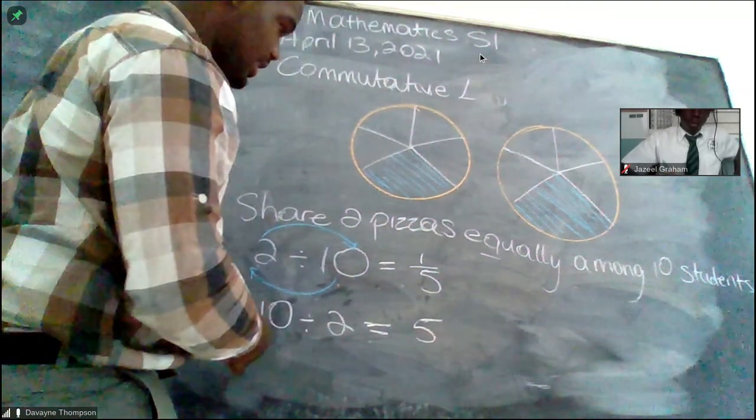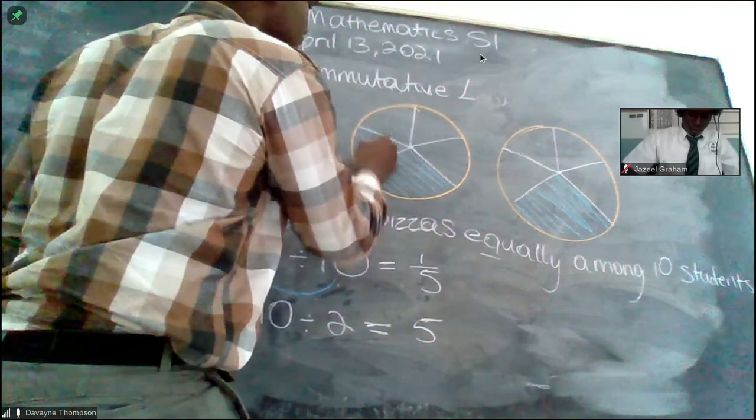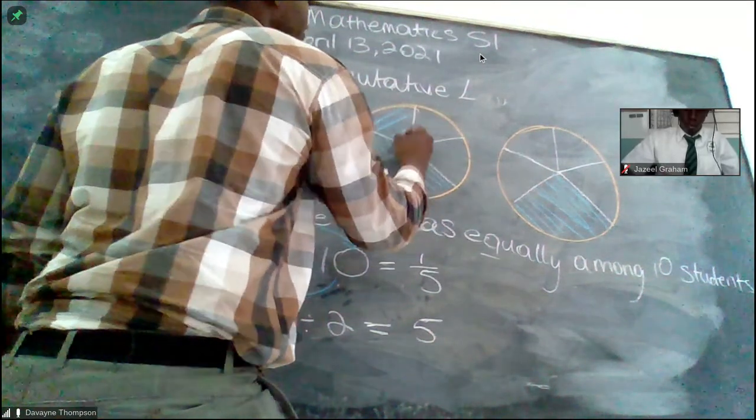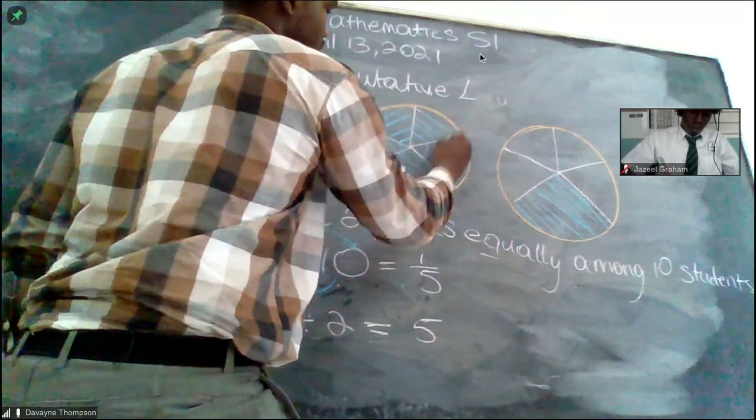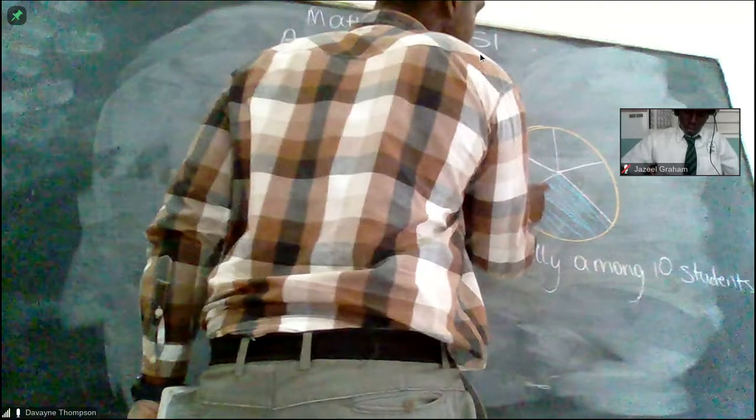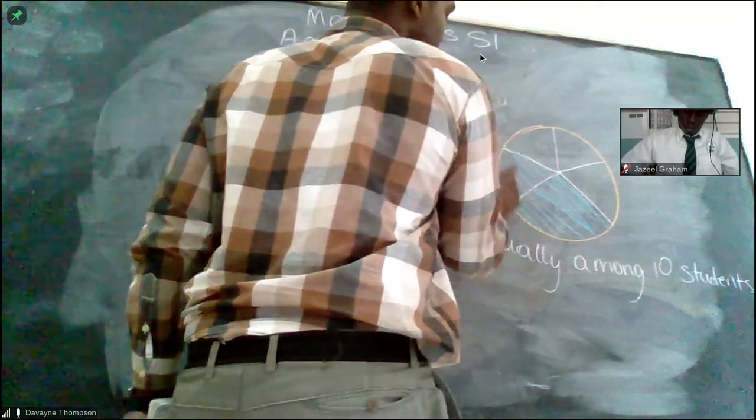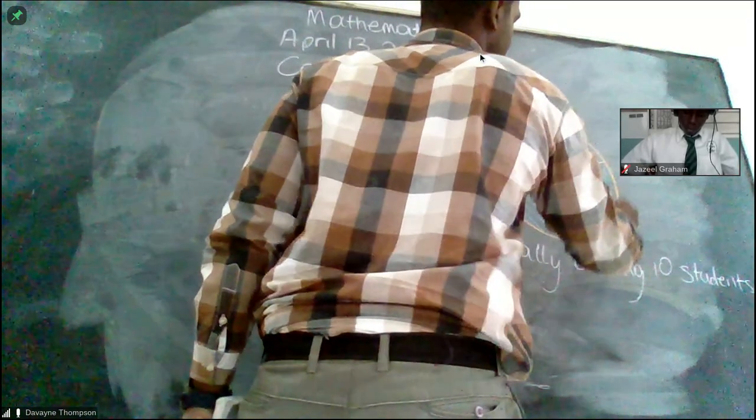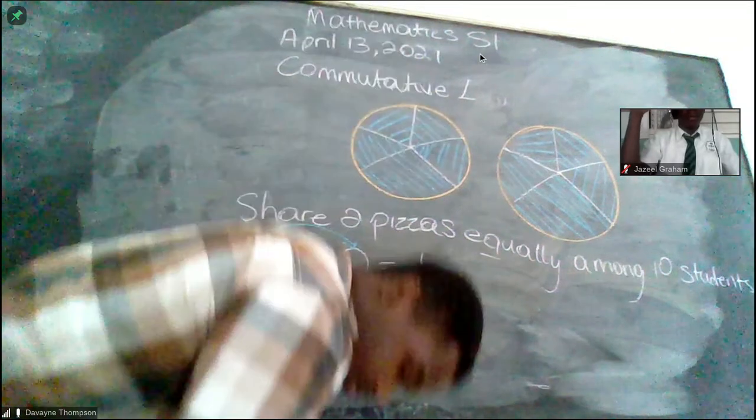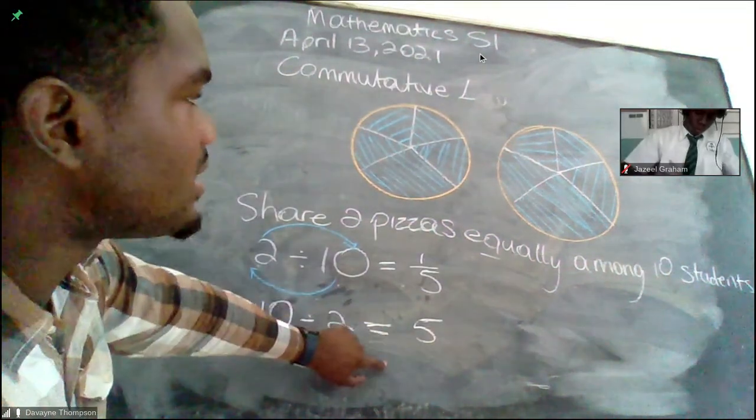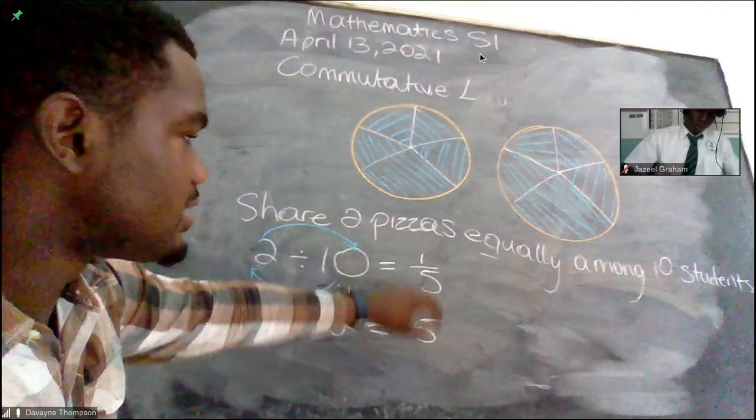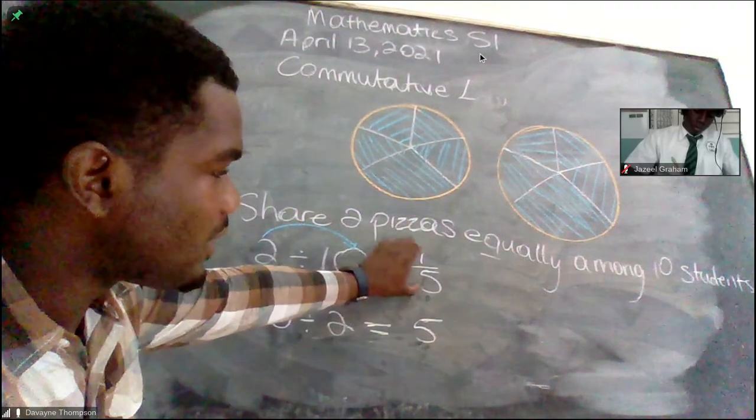So 5, that means Jaziel would have got 5 slices of pizza if he was to get 10 pizzas divided by 2 persons. This entire pizza would belong solely to Jaziel and this entire pizza would belong solely to Nicholas for example. That's why division is not commutative, because it doesn't allow me to share equally in the same way. Five and one-fifth is not the same.